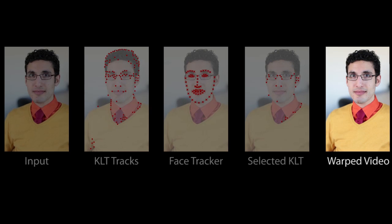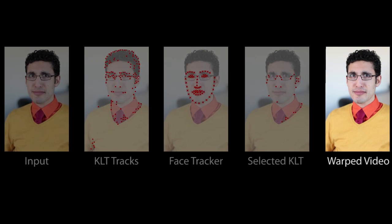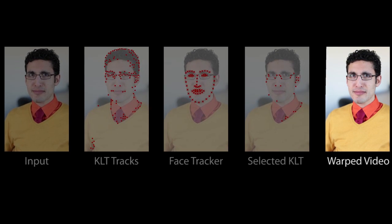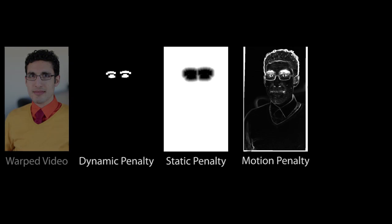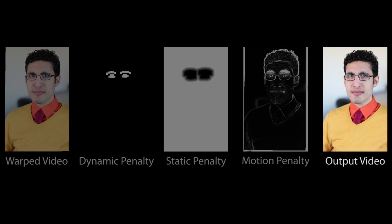The selected tracks successfully immobilize the face after using a spatially varying warp. We use 2D graph cut to composite the warped video with a stale image. Penalties, which act as constraints, are generated automatically to encourage moving facial parts to be retained in the final output while the rest of the image is stale.